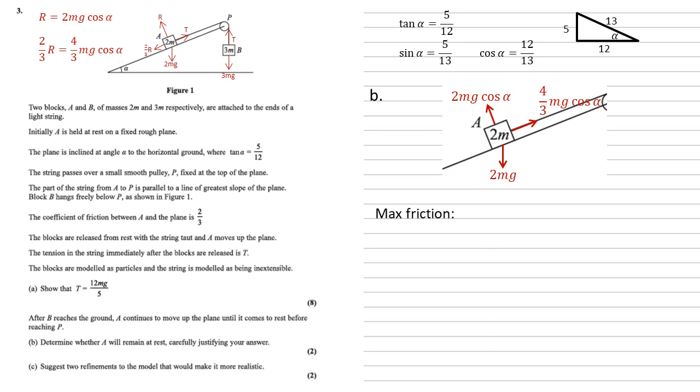So we know that the maximum friction is this 4 thirds mg cos alpha. We know that cos alpha equals 12 thirteenths. So this is 16 thirteenths mg. The force pulling A down the slope, that's just the 2mg due to gravity. Again, it's coming at an angle. So we've got 2mg sin alpha to make that force parallel to the plane. That equals 10 thirteenths mg.